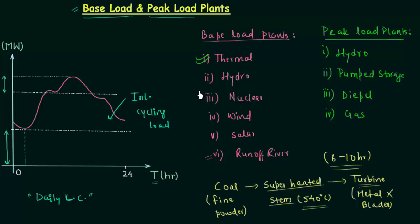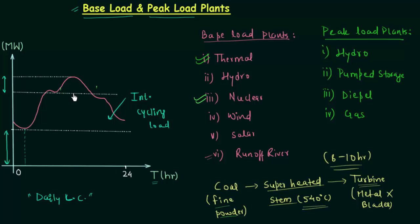The same applies to nuclear power plants — the time is not exactly the same since we don't crush coal but use radioactive materials and nuclear fission to produce superheated steam, but it still requires significant time. So to satisfy peak load using thermal power, you would need to know the timing 8 to 10 hours in advance. By the time the plant starts producing electricity, the peak load is already gone. That's why we don't use thermal or nuclear power plants to satisfy peak load — we use them as base load plants.